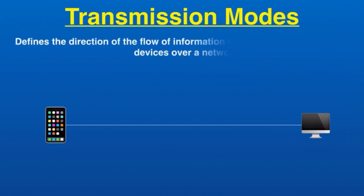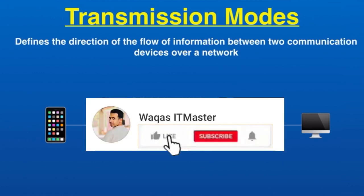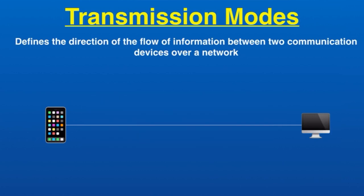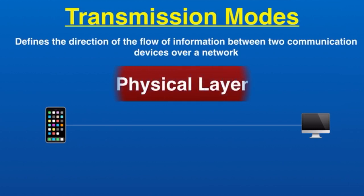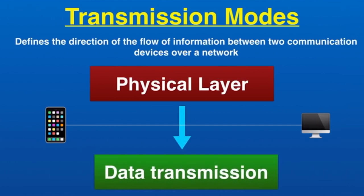Today we are going to talk about different types of transmission modes used in communication. Transmission mode defines the direction of the flow of information between two communication devices over a network, also called data communication or data transmission. Networks are developed to allow communication between interconnected devices. In the OSI model, the physical layer is dedicated to data transmission and decides the direction in which data needs to travel to reach the destination.